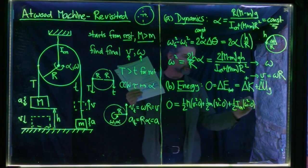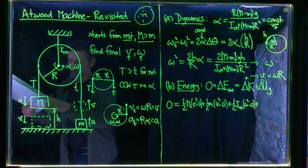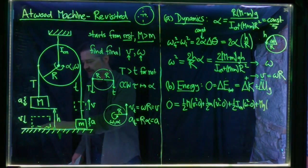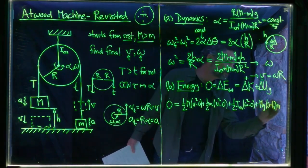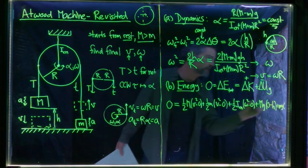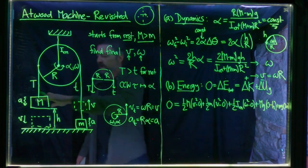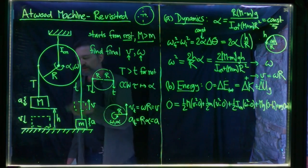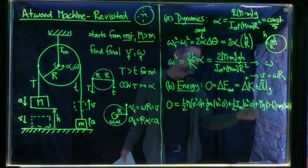Adding the change in gravitational field energy — which equals positive Mg times delta height — for big M falling height H: it's big Mg times (zero minus H), which is negative. For little m rising height H: it's little mg times (H minus zero), which is positive. Big M's term is larger in magnitude, so there's a net negative change in gravitational field energy. The sum of all these terms equals zero.